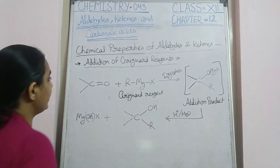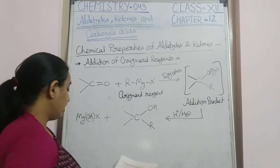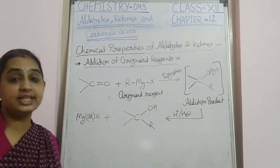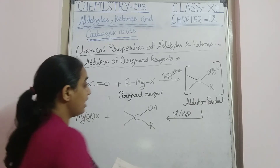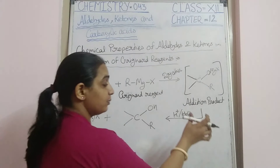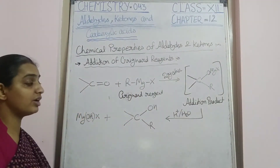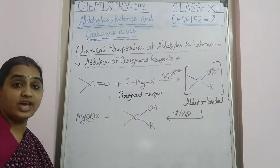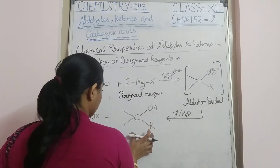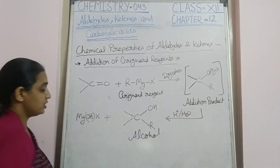The next reaction is the addition of the Grignard reagent. The aldehyde or ketone reacts with the Grignard reagent in the presence of dry ether to form an addition product (adduct). This adduct, upon treatment with H⁺ and H₂O, is converted into an alcohol along with MgOHX.